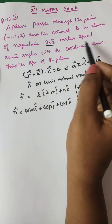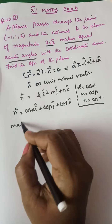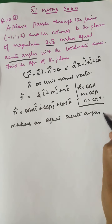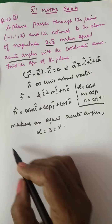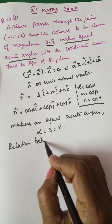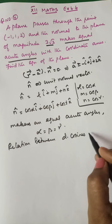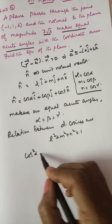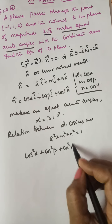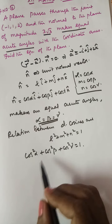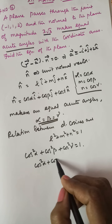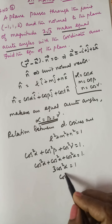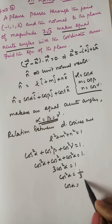To find the equation of the plane, we use the direction cosines identity: L² + M² + N² = 1, i.e., cos²α + cos²β + cos²γ = 1. Since the normal makes equal acute angles, α = β = γ. Therefore, 3cos²α = 1, so cos²α = 1/3, and cosα = 1/√3.